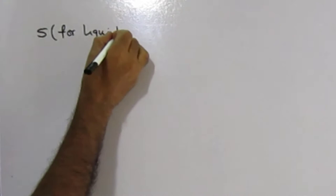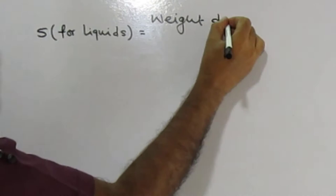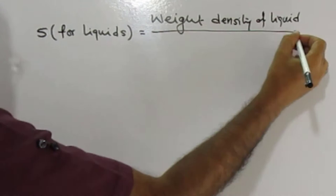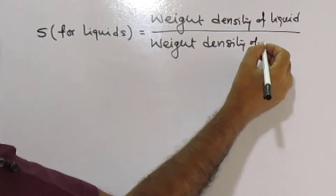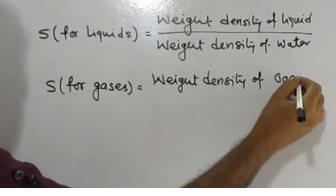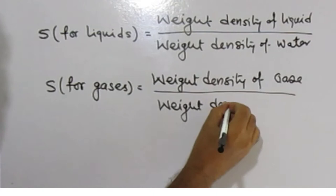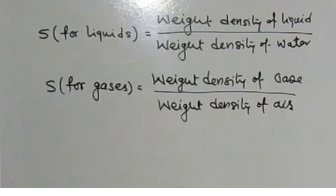Next property is specific gravity. Specific gravity is defined as the ratio of the weight density of a fluid to the weight density of a standard fluid. For liquids, the standard fluid is water, and for gases, the standard fluid is air. Specific gravity is also called relative density. It is a dimensionless quantity and its symbol is S.